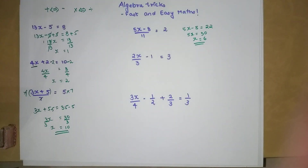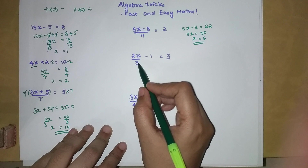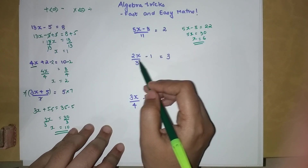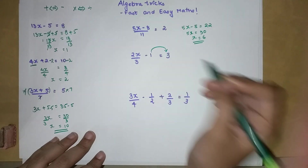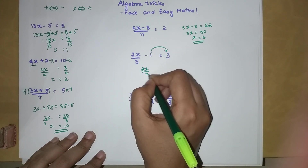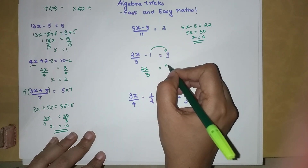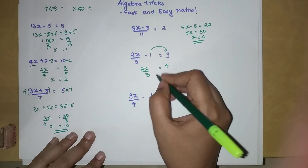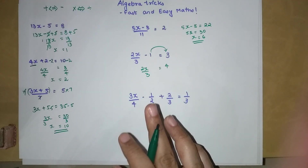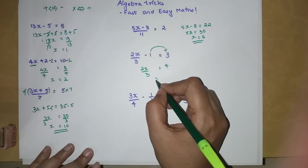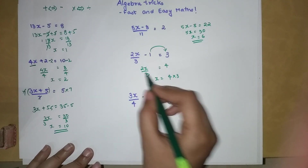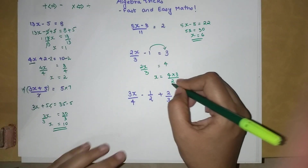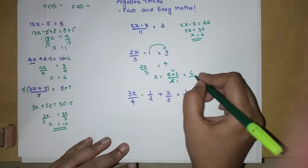At the end of this video I will put up a DIY for you to solve and post your answers in the comments. Now notice the difference here — this example also has a denominator, but the denominator is not covering the entire LHS, so you have the liberty of shifting the 1 directly. We get 2X over 3 equals 4. The 3 shifts to the numerator on the right and the 2 shifts to the denominator, giving X equals 12 over 2, which is 6.